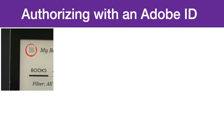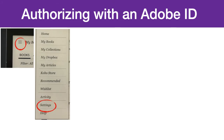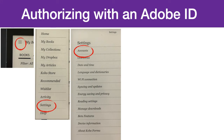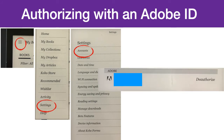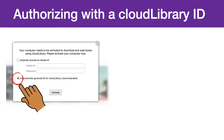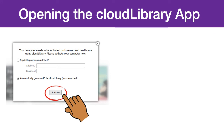If you are unsure if your Kobo has already been authorized with an Adobe ID, you can go to the three lines in the top left of your Kobo. Your Kobo may look slightly different, as this is a Kobo Forma on screen. You can then go to Settings and finally to Account. Under Account at the bottom, you will see if your Kobo is authorized with any ID including an Adobe ID. As mentioned before, you will want to be consistent with which ID you are using. If you don't have an Adobe ID and do not want to create one, click the second option to automatically generate an ID for Cloud Library. This option will create an ID using only your library card number. Finally, click Activate.